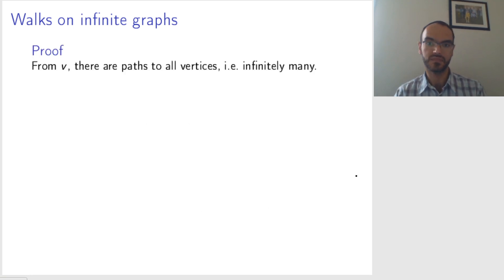So how do we prove this? So let's start with v. You have any vertex v. Since the graph is connected, you have paths from the vertex v to any other vertex, so you have infinitely many paths starting with the vertex v.